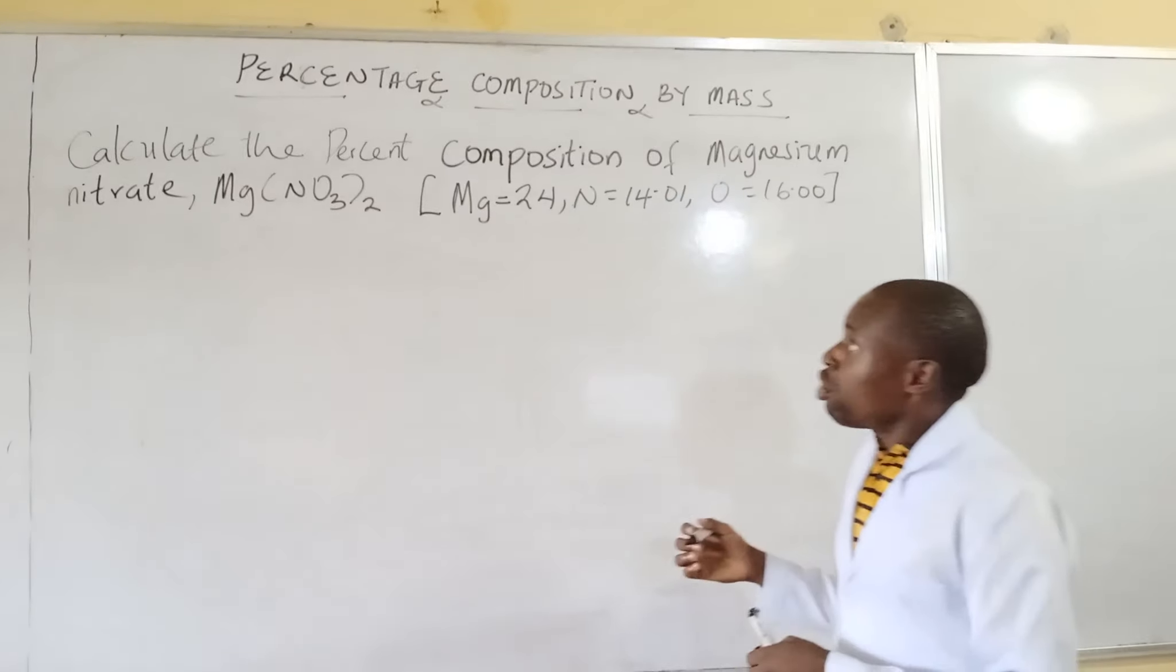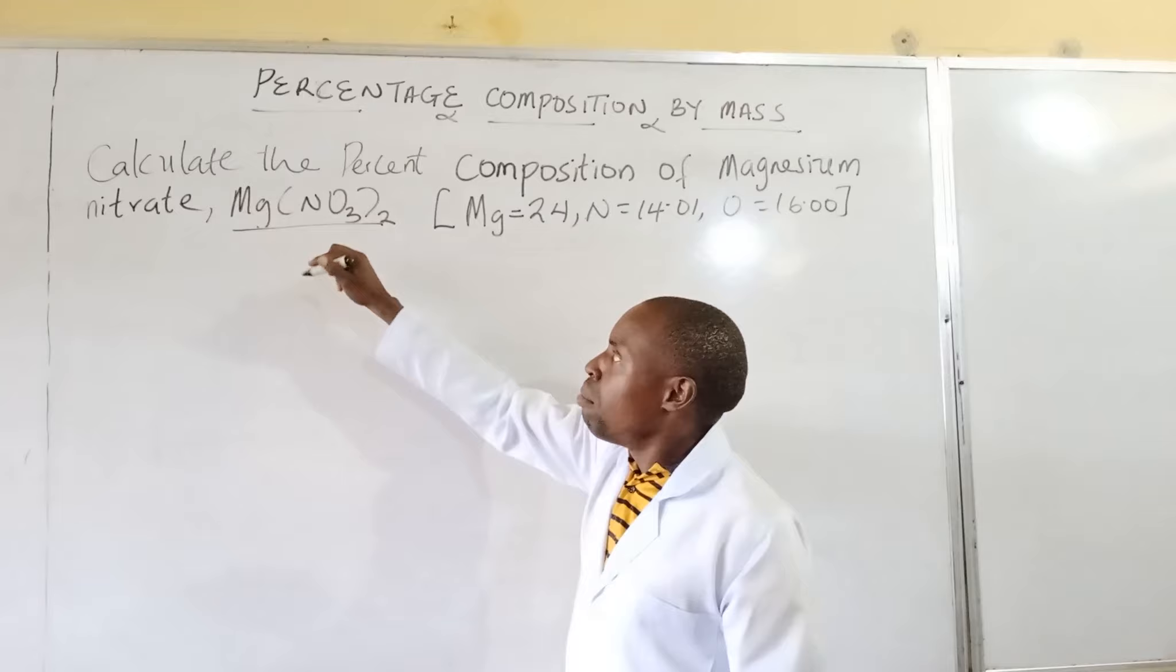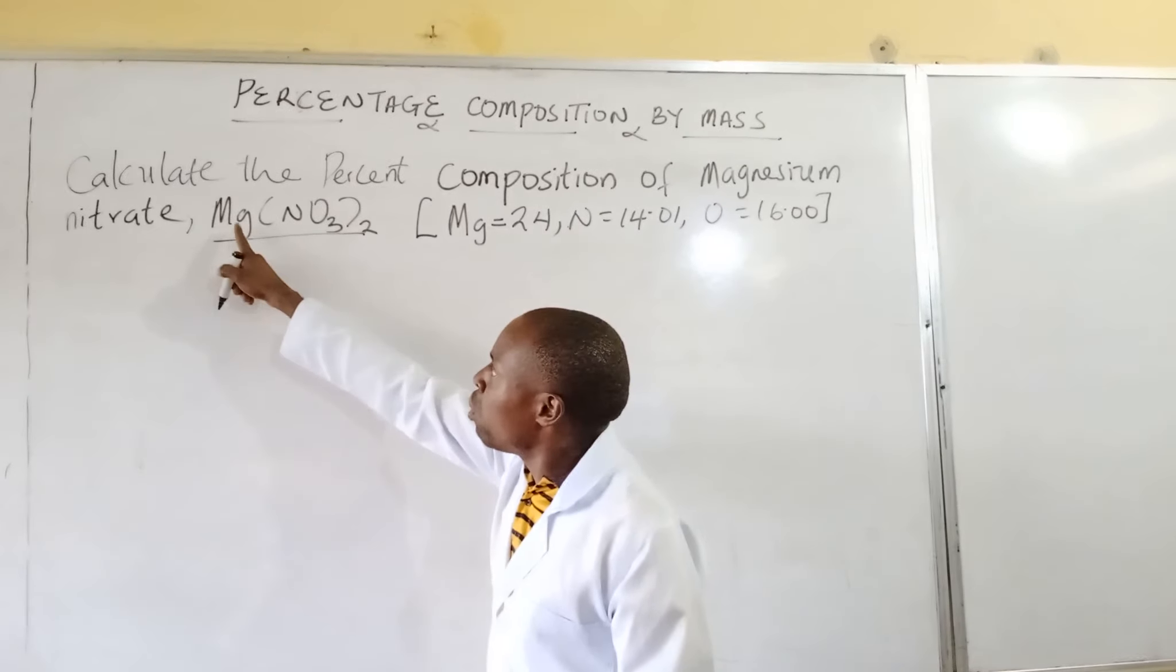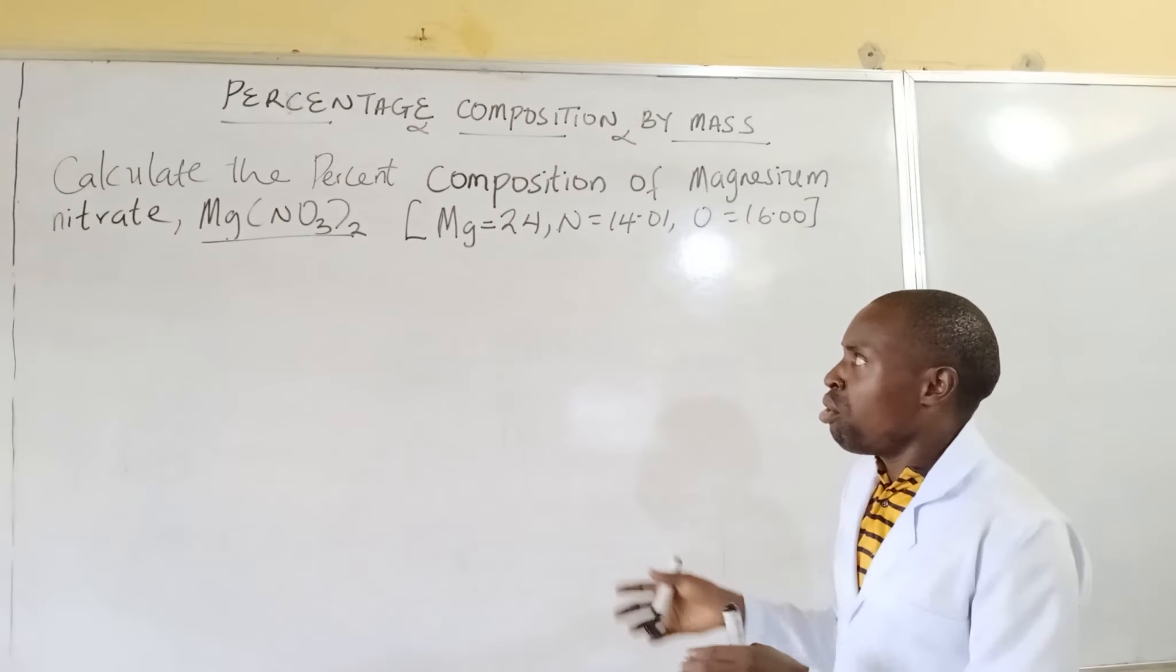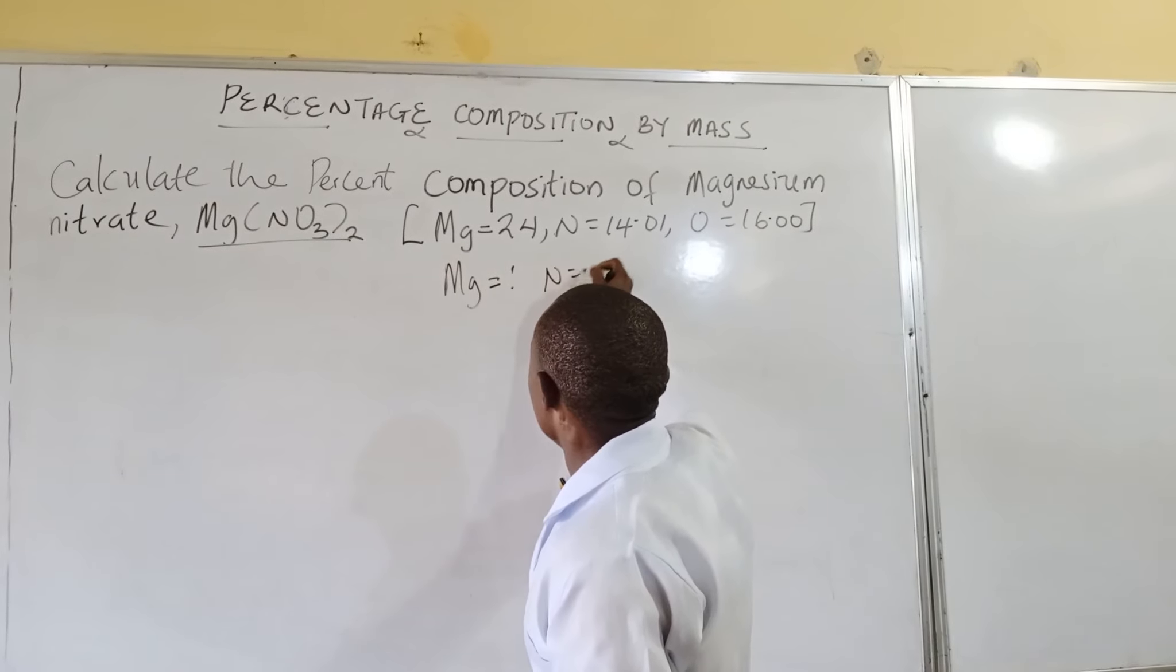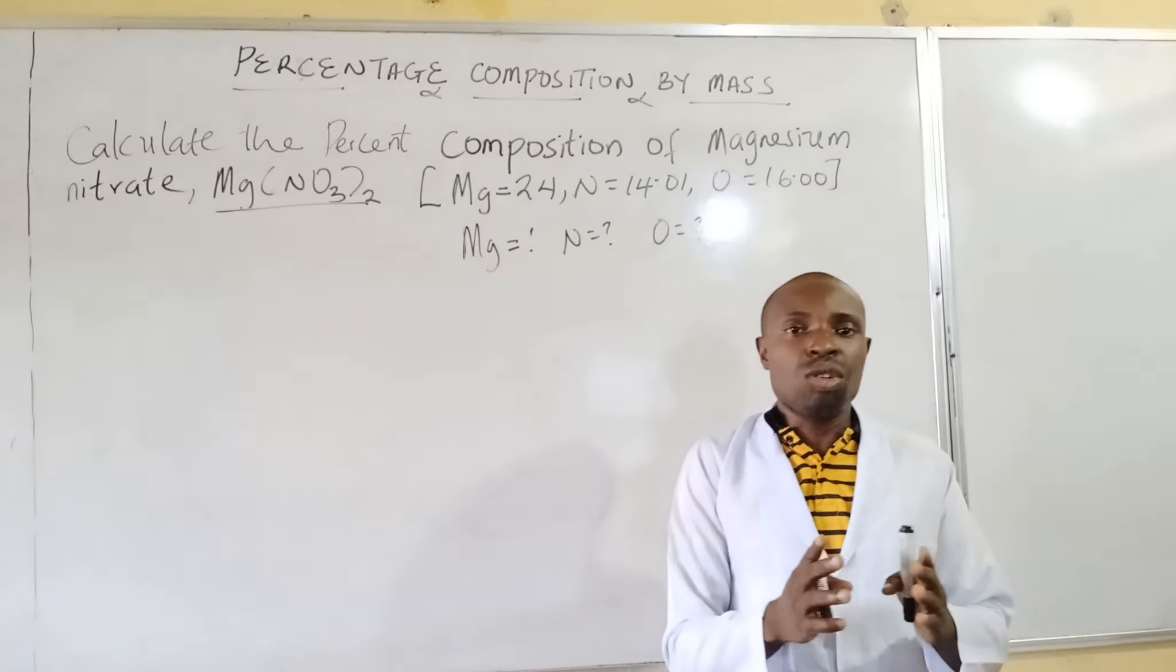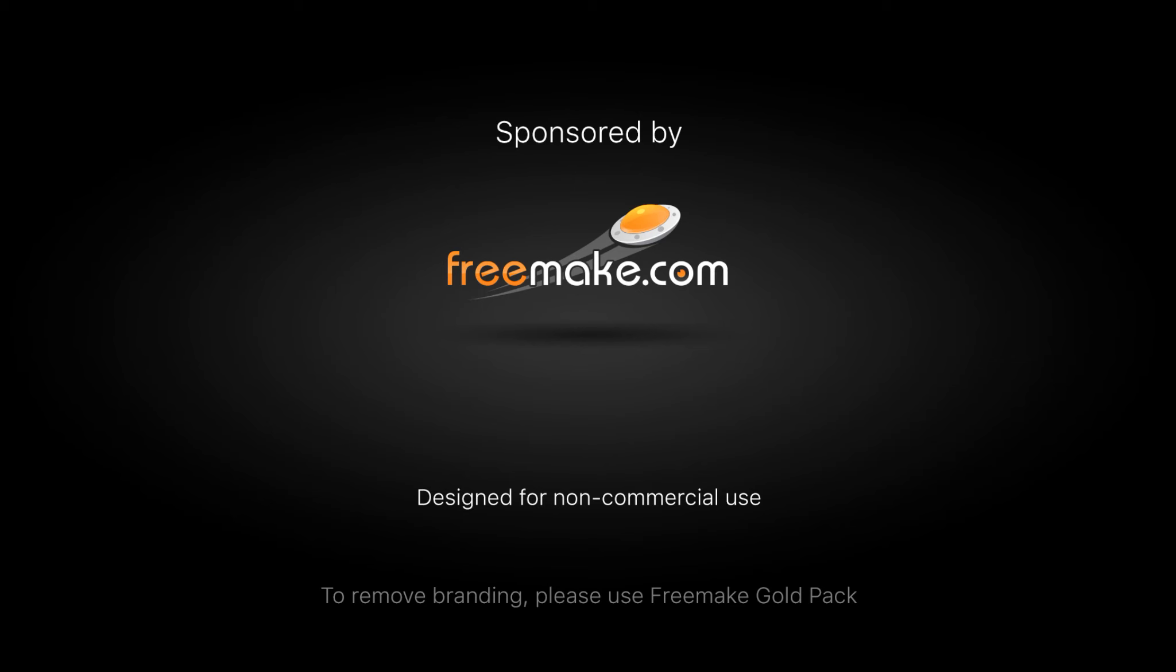Since you know the compound is magnesium nitrate, and the components include magnesium, nitrogen, and oxygen, what would you do now? Calculate for each of them. You have to get the percentage by mass of magnesium, nitrogen, and oxygen. That should give us the final answer. So you can solve it. When you are done solving it, put the answer in my comment section. God bless you.